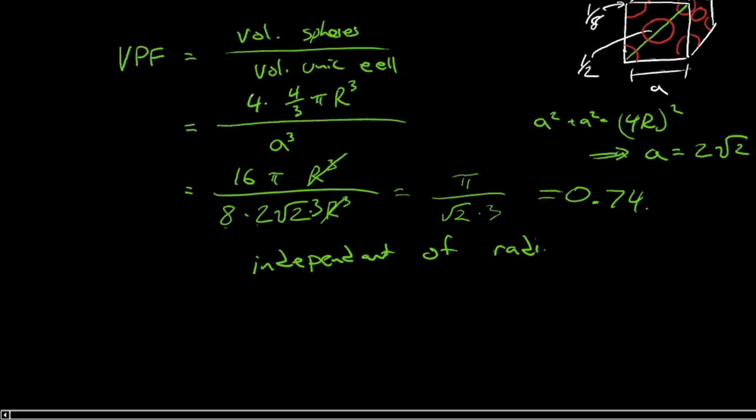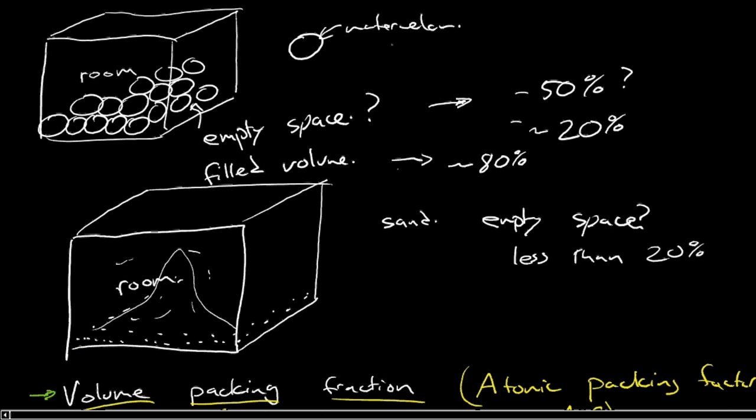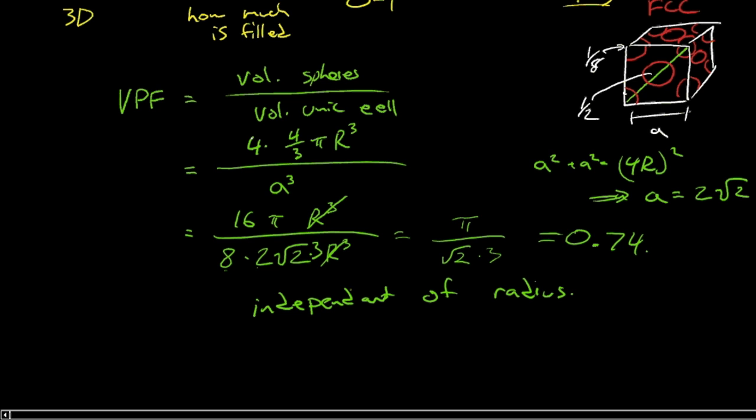So we can actually go back to this question we posed up here and say, watermelon versus sand, it doesn't matter. Because as long as we're modeling them as spheres, their packing is going to be the same. They'll be the same empty space around them. You intuitively think, well, the smaller things are going to have tighter packing. But you see, mathematically, it's independent of radius. Radius cancels out.